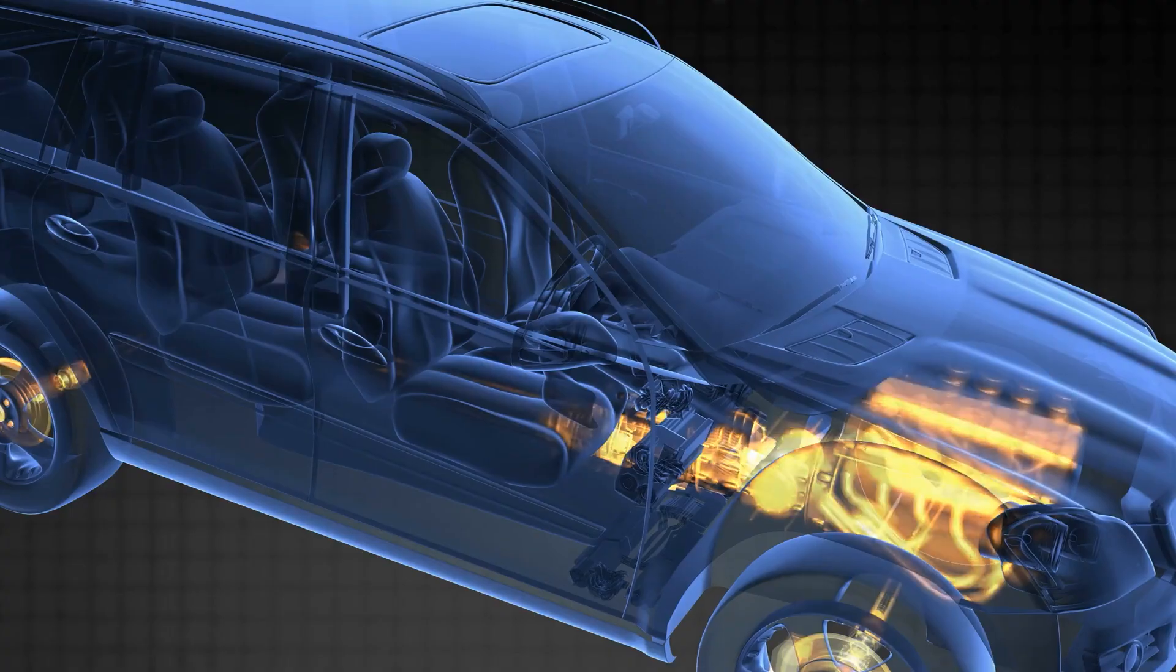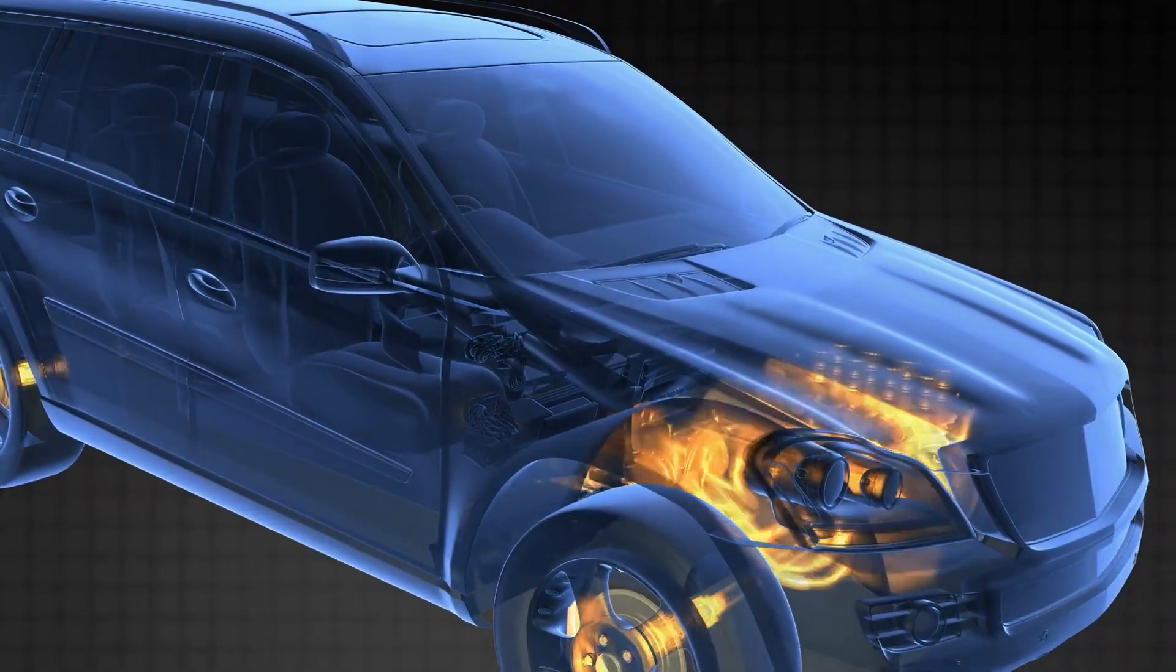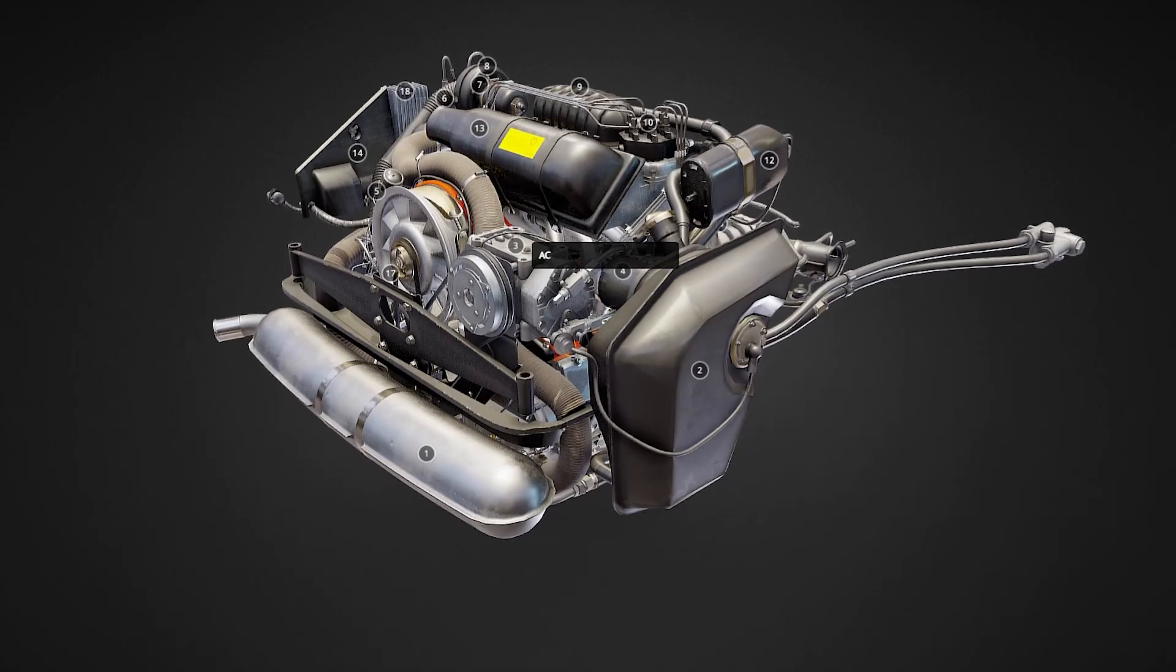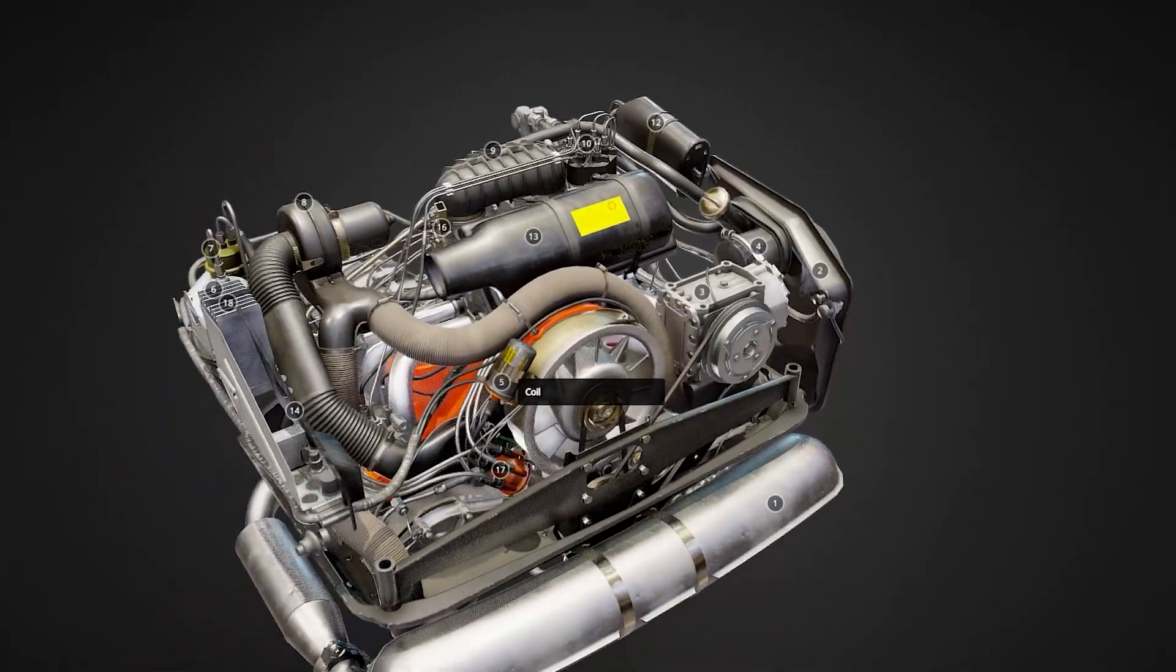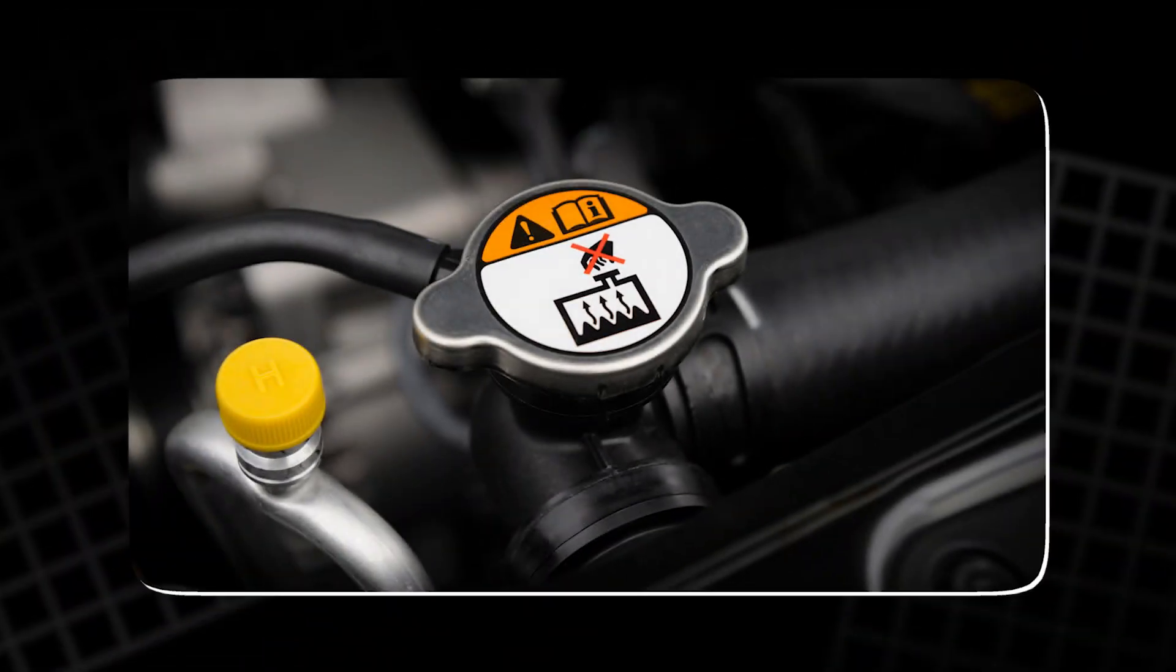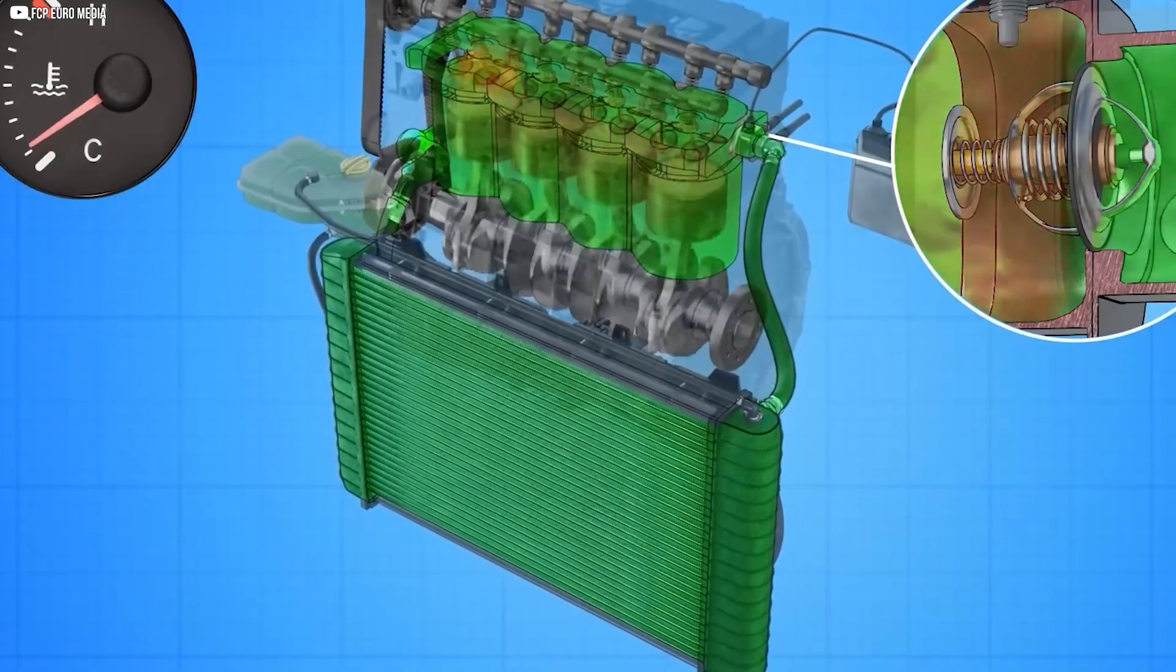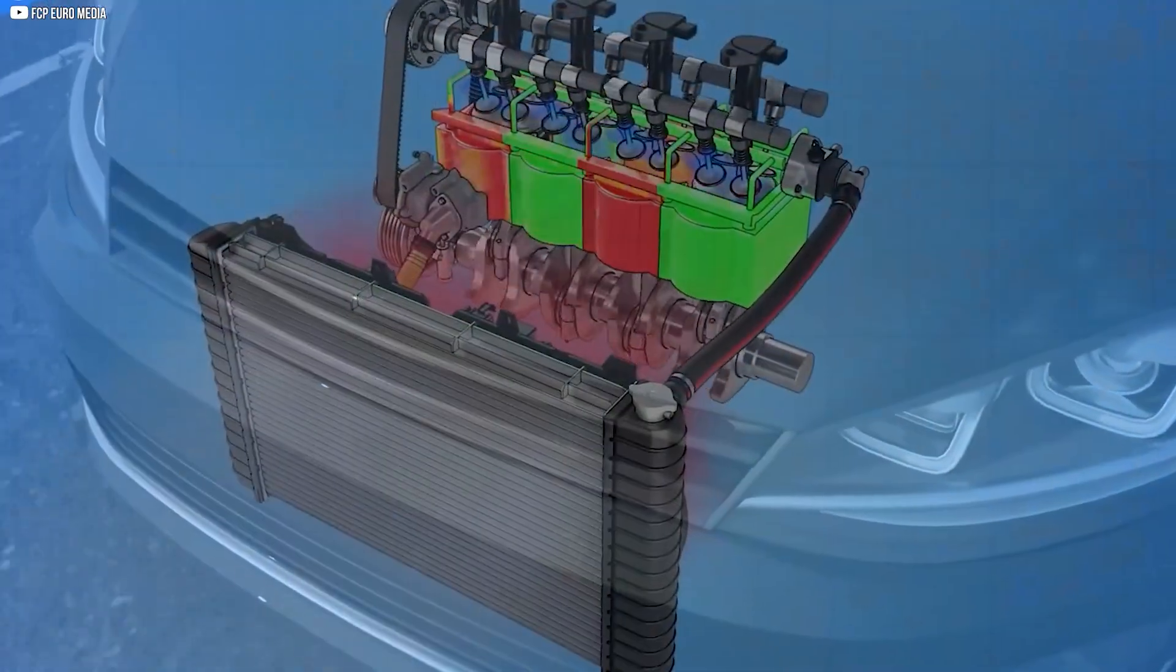After the engine shuts down, the fire in the cylinders fades and the block begins to cool. The coolant that once swelled with heat now contracts. As its volume shrinks, a vacuum forms inside the sealed system. If nothing was done, the pipes could collapse under this pull.